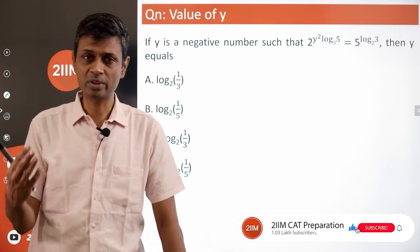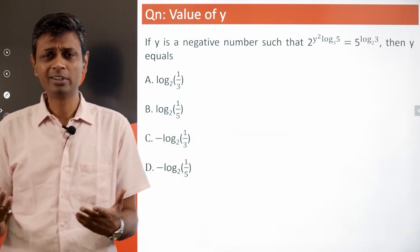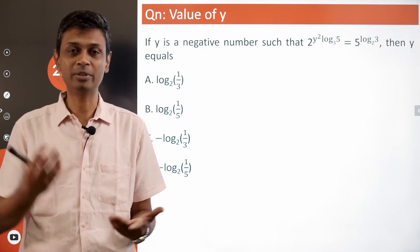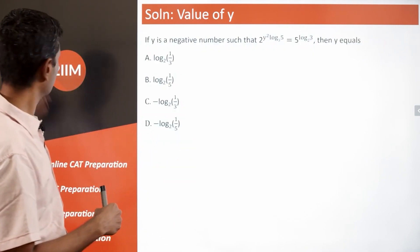Very often in these kind of log questions where an exponent is there and log is there, a simple trick in the book is take log on both sides. That might simplify something. So I am going to try to do that. Take log on both sides and we will try to do this.